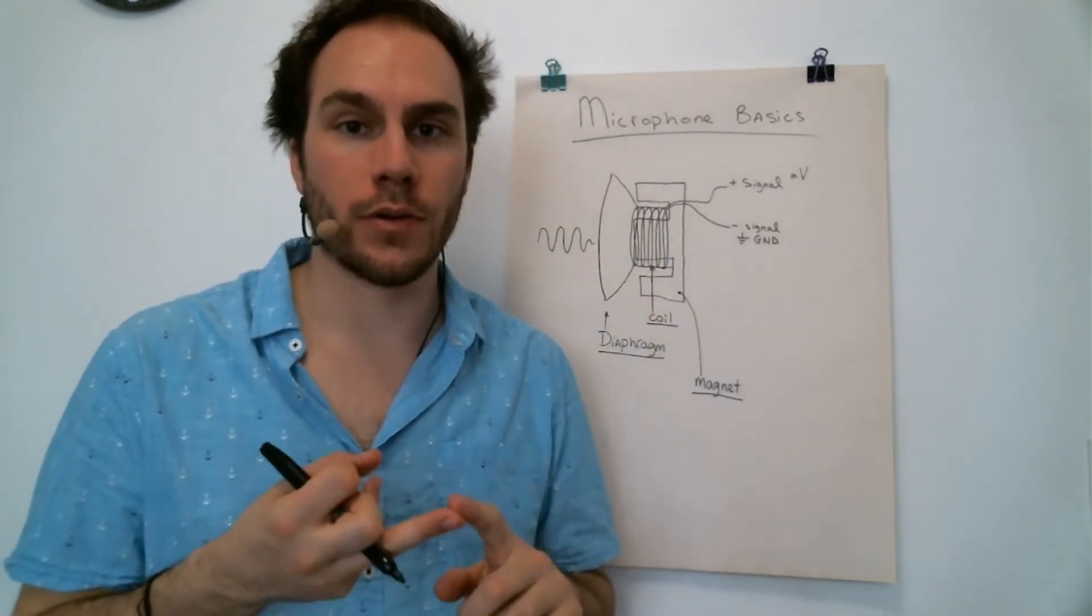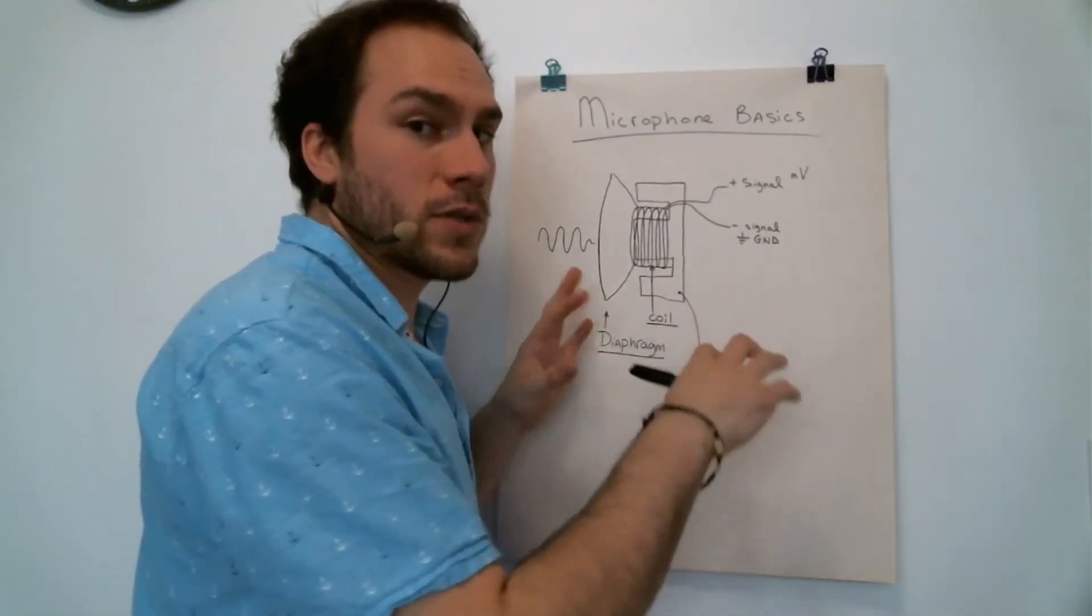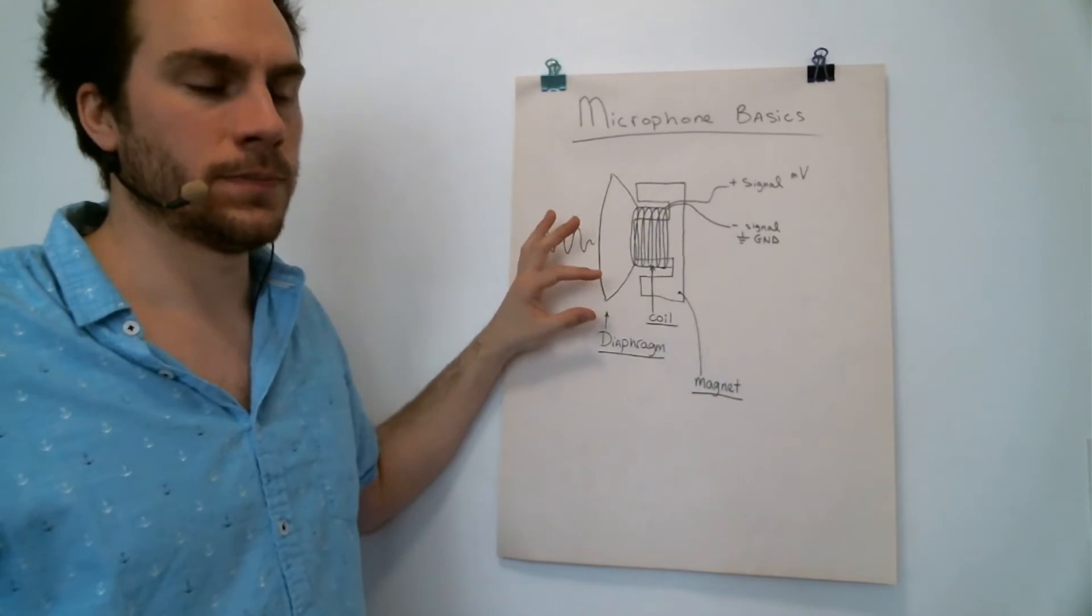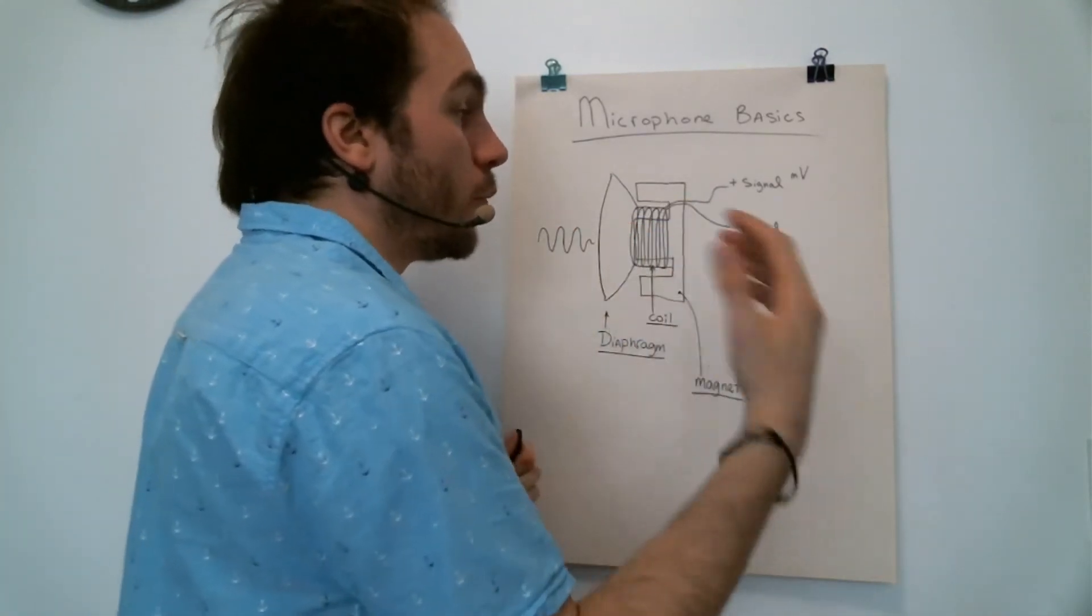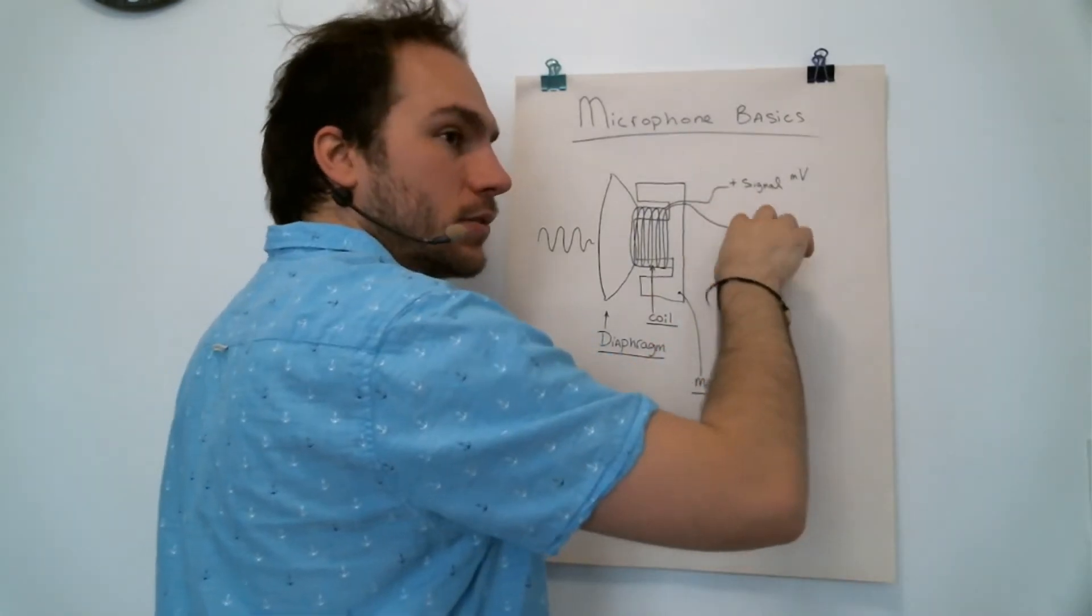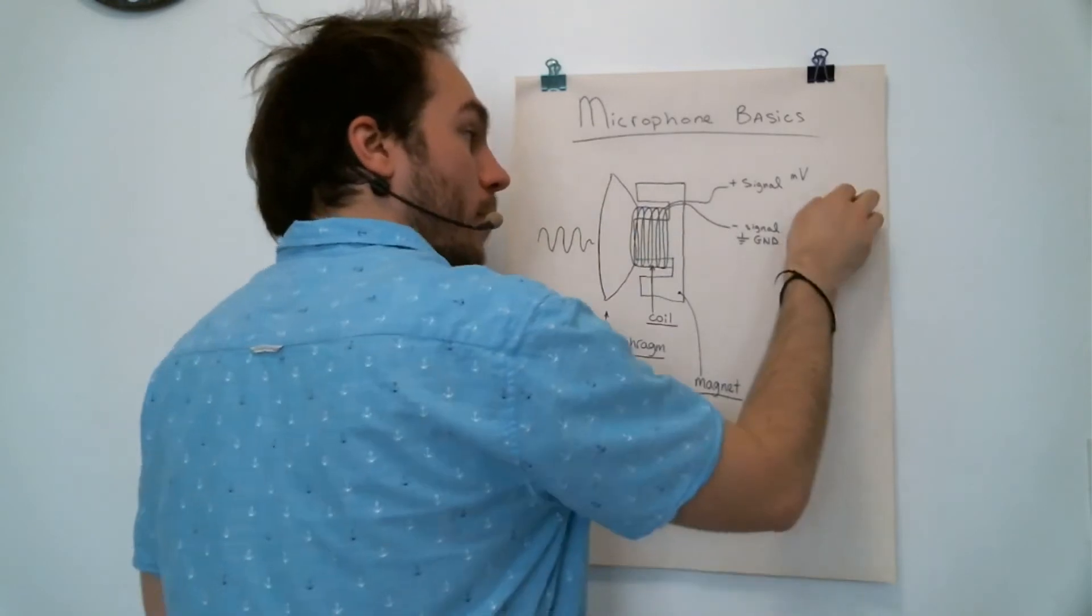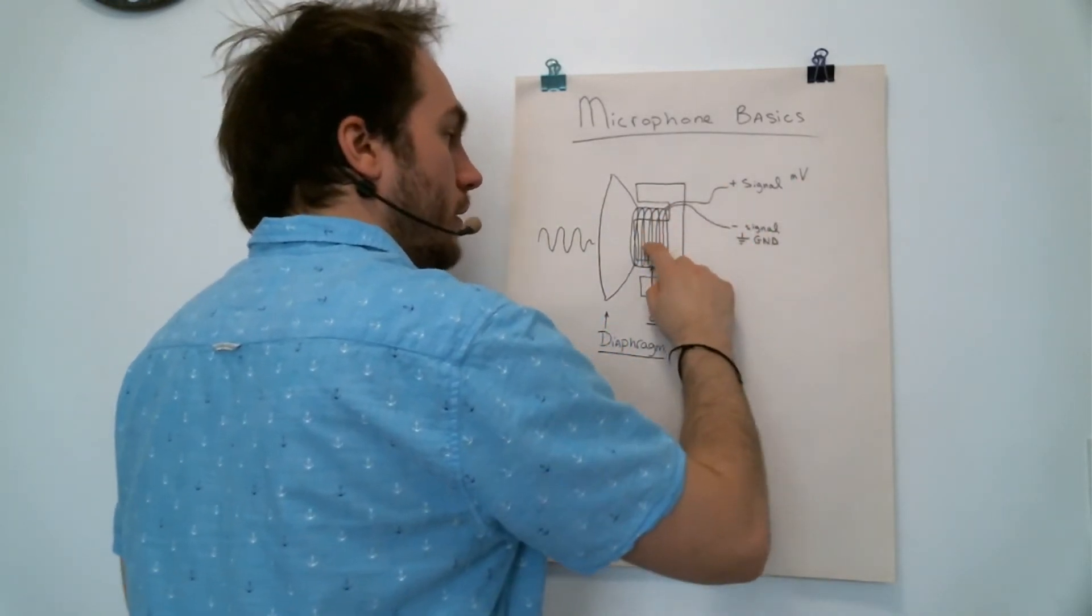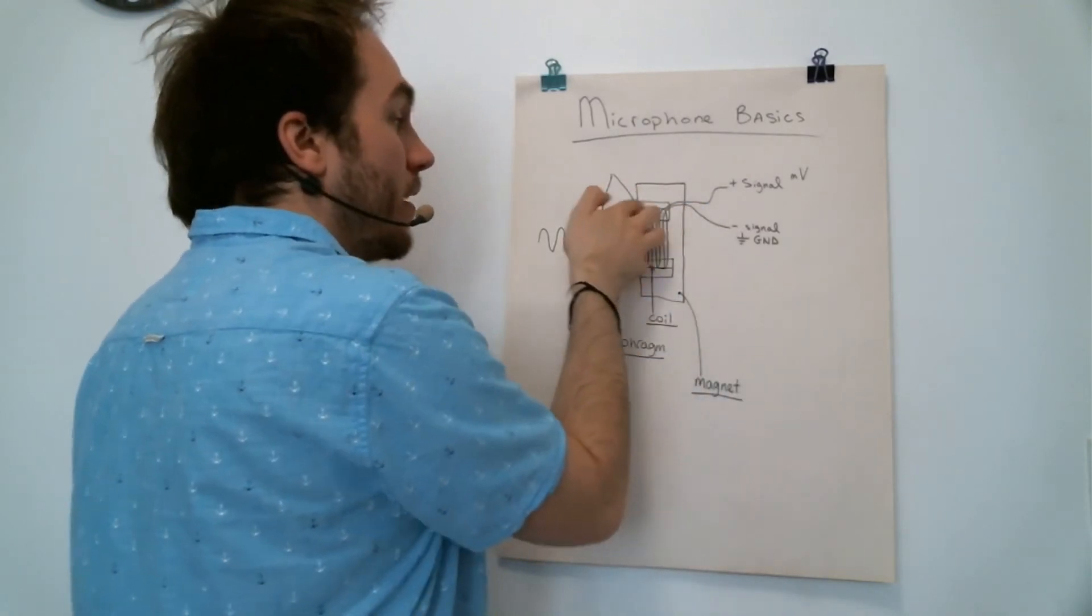So that was the very basics of a dynamic microphone. A speaker is exactly the same design but in reverse. The signal at the input is very loud and is coming from an amplifier. Then it's fed into the coil and creates a magnetic field because of the magnet, and then it moves the diaphragm which will produce the sound.